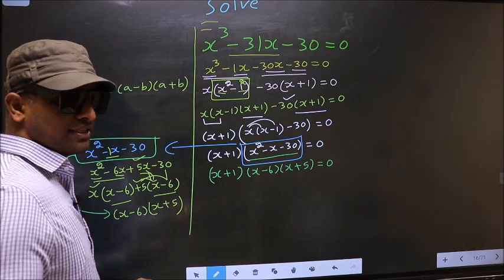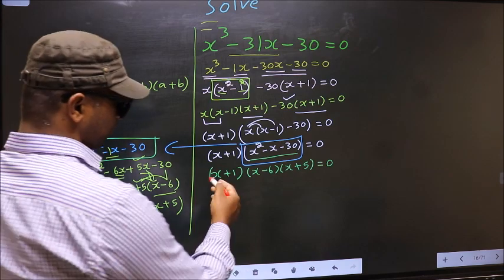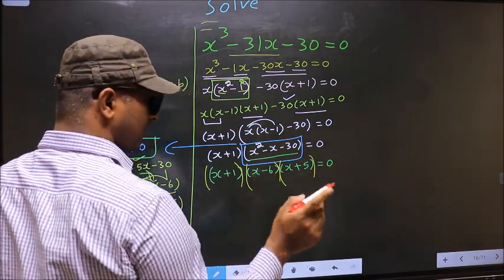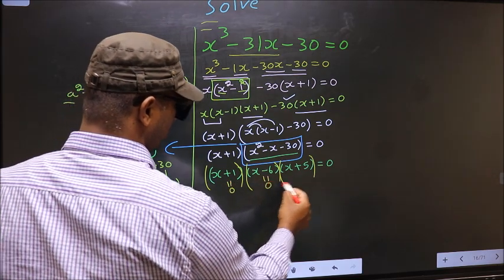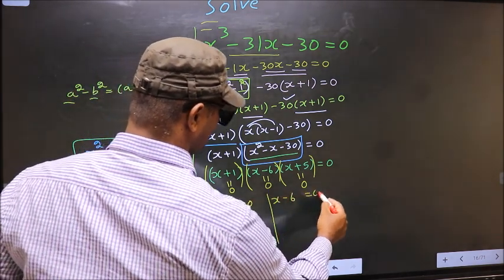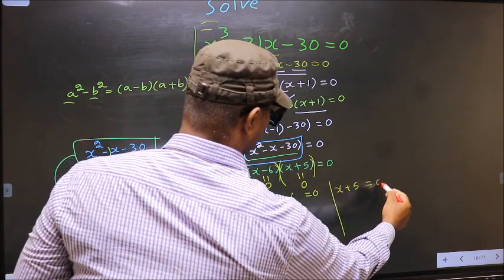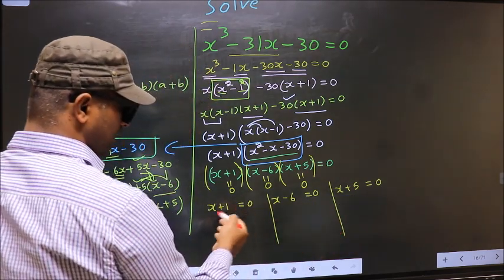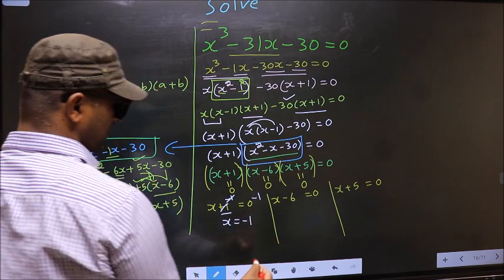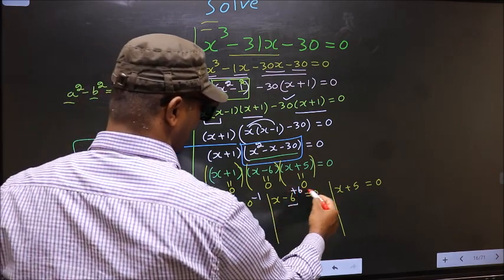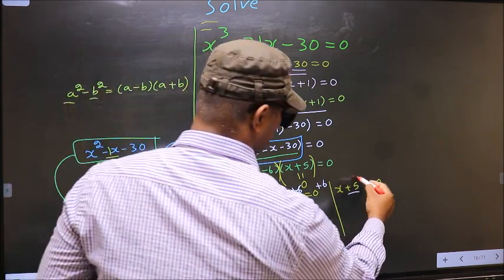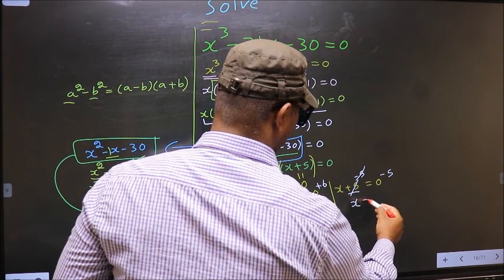They told us to solve, meaning we should get the values of x. Over here we got a product of brackets equal to 0, so we equate each bracket to 0. That is x plus 1 equal to 0, giving x equal to minus 1. Here x minus 6 equal to 0, so add 6, giving x equal to 6. Here x plus 5 equal to 0, so subtract 5, giving x equal to minus 5.